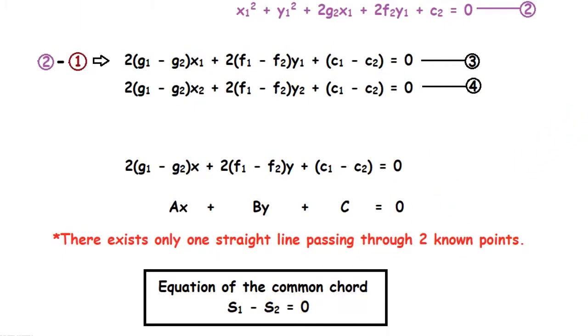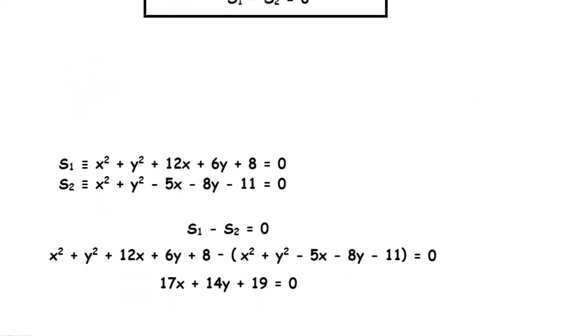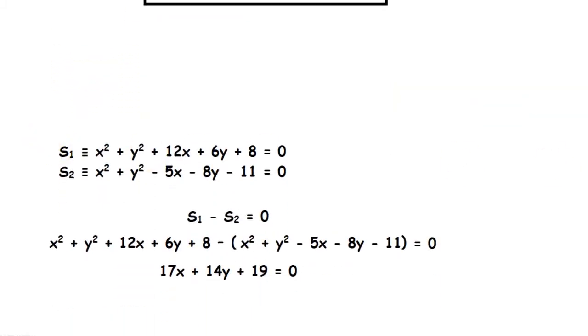Let's take an example. Here, you are given two circles. S1 = x² + y² + 12x + 6y + 8 = 0. And another circle S2 which is x² + y² - 5x - 8y - 11 = 0.